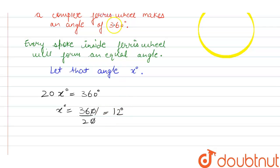I am sorry, it's not 12, it's 18 degrees. So angle between two consecutive spokes is 18 degrees. I hope you get the answer. Thank you.